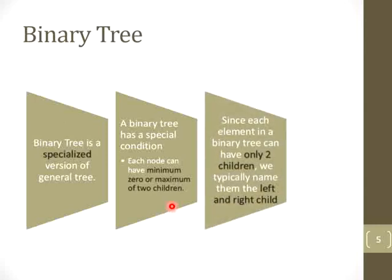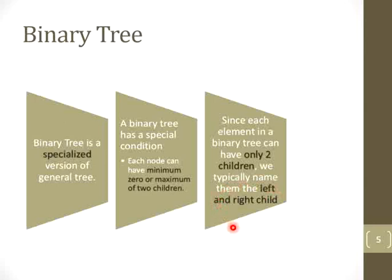As we have seen, a maximum of 2 children can be there for every parent node. That's why we can typically name them as a left child and a right child, and they are helpful to identify and recognize the child node of every parent.